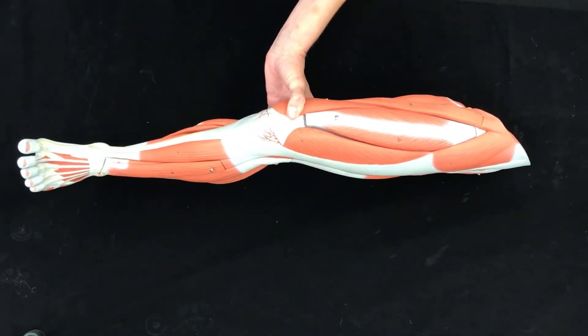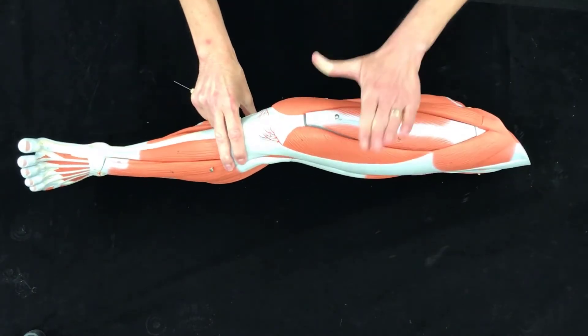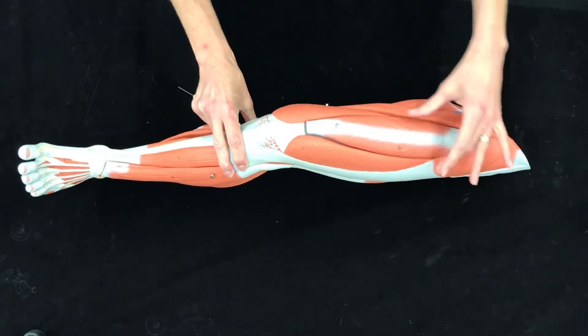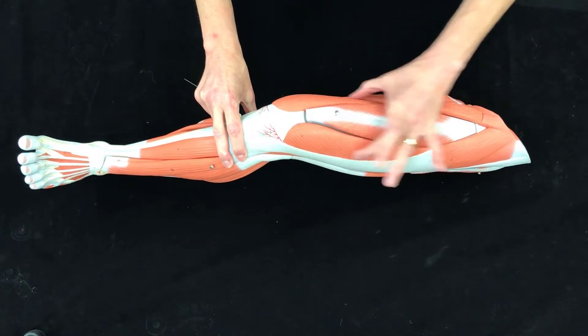Okay, so we're starting with the quadricep muscles. So these are your thighs. Think back to quadriceps. You did this back in AP1. You had your hot dog in the bun.